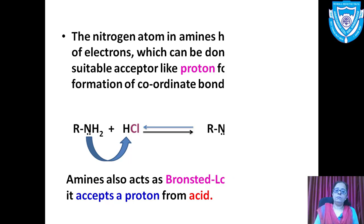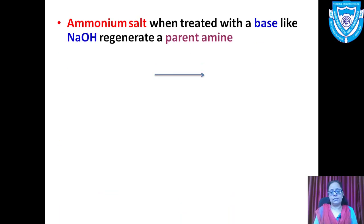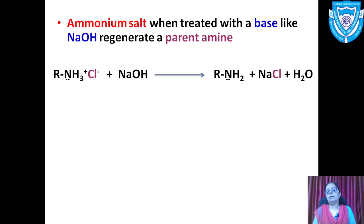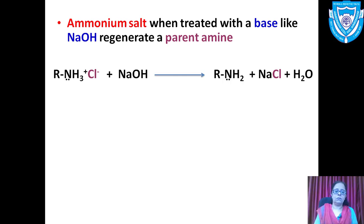When the ammonium salt is treated with a base like NaOH, it generates the parent amine. The substituted ammonium chloride, which is soluble in water, reacts with aqueous NaOH and you get your amine back. This is again a test to detect the basic nature of amines.